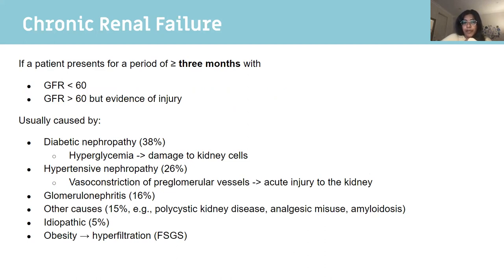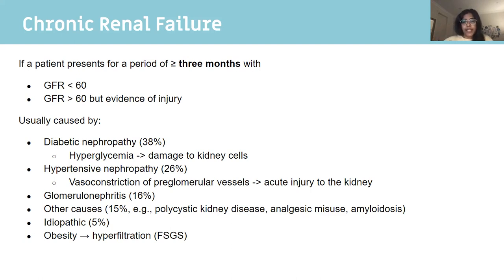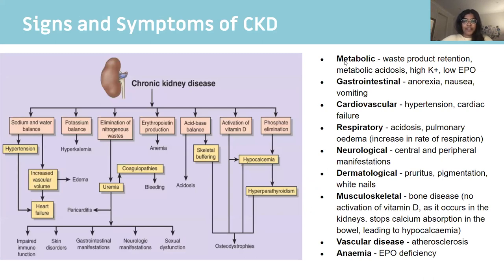Chronic renal failure is defined as a decreased GFR for more than three months — three months is the important number that makes it chronic. Common causes include diabetic nephropathy (approximately 70% of patients on rotation had CKD from diabetes), hypertension, glomerulonephritis, polycystic kidney disease (an autosomal dominant genetic disorder causing renal cysts), misuse of analgesia, and obesity-related glomerulonephritis.